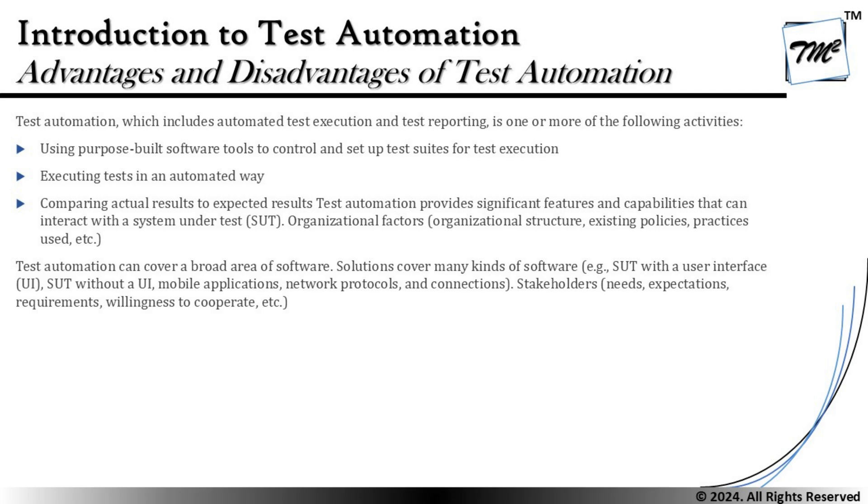Automation capabilities include the ability to interact with a system under test, organizational factors like structure, existing policies, and practices. Automation tools are not just limited to executing tests — we can also automate the capturing of actual results during runtime and compare them with expected results. Automation tests can be used for multiple purposes including reporting. We must know that automation covers more than just generic functional testing.